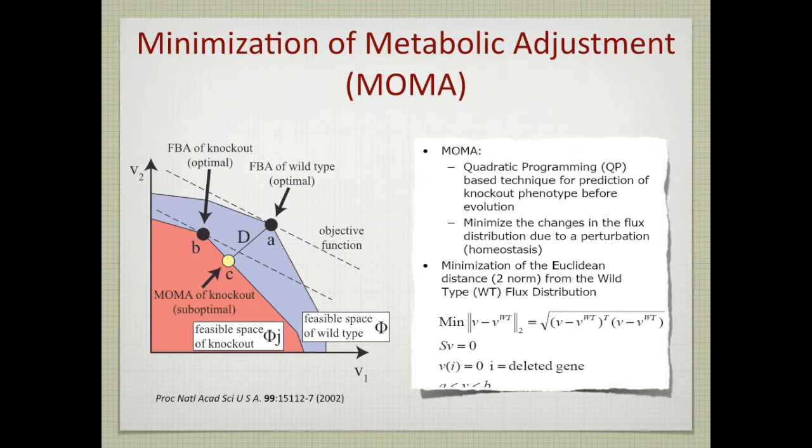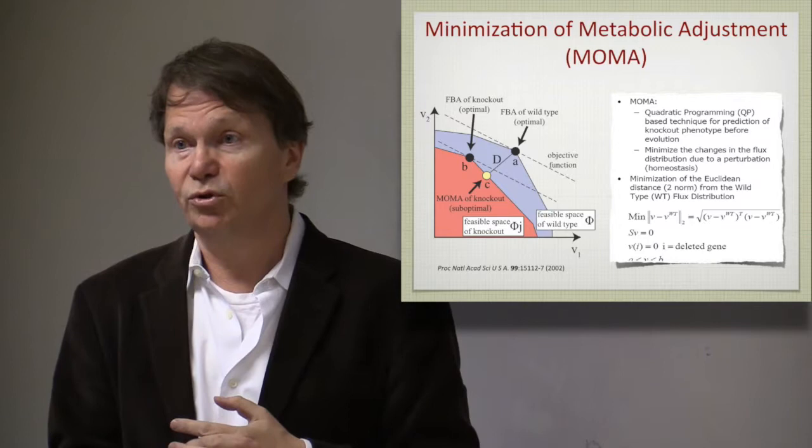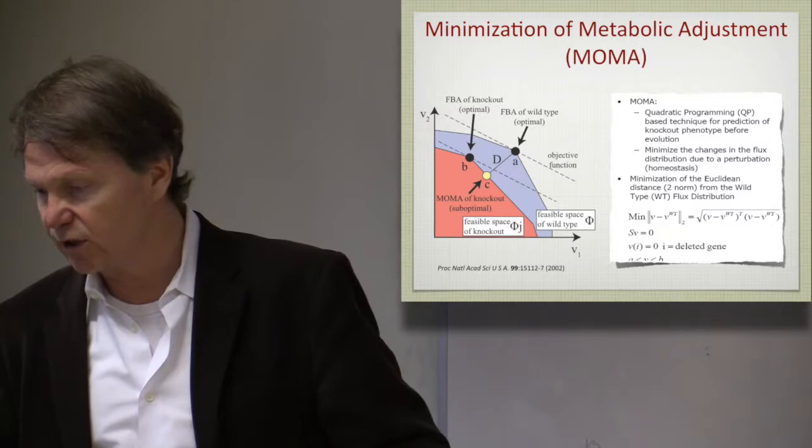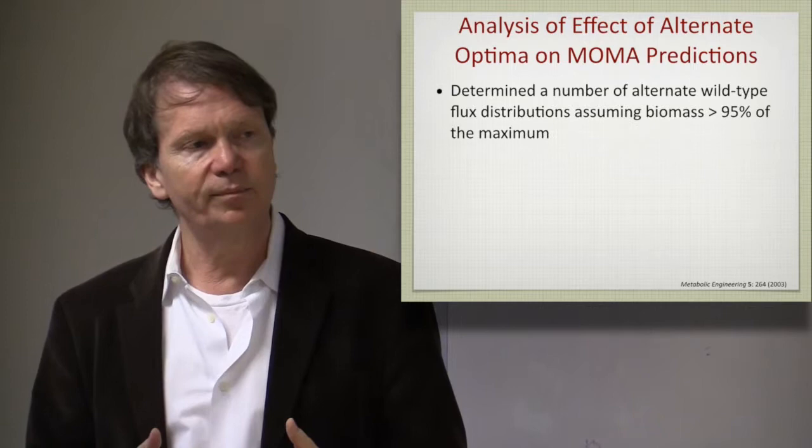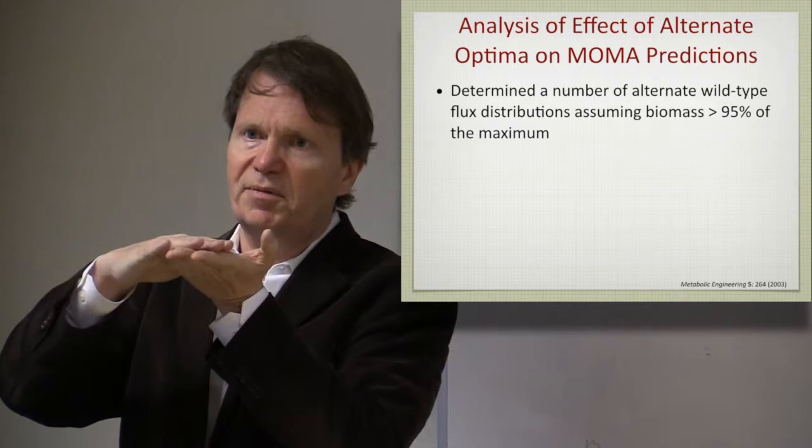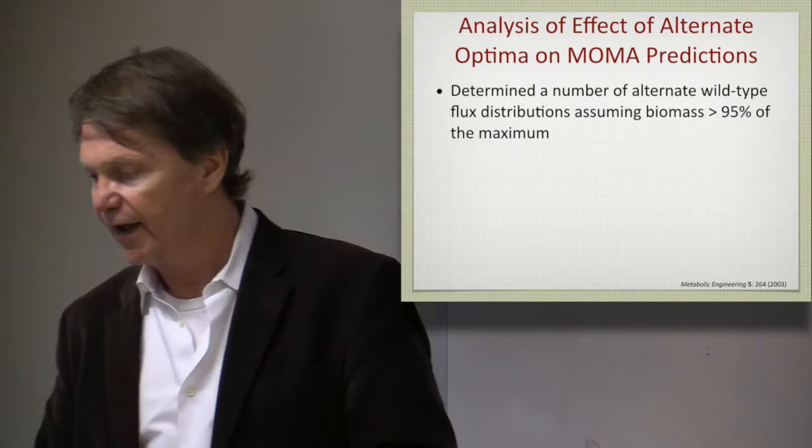However, the challenge with this is that the point that you're projecting from may not be unique. Remember, you can have alternative optimal solutions. So which ones do you project? And that has actually, that question has actually been addressed, where you can take a wild type cell grown on a particular substrate, and not enforce strict optimality, but maybe 85 percent of optimal growth rate, and you can calculate a bunch of growth states there.